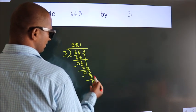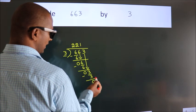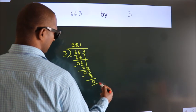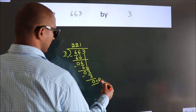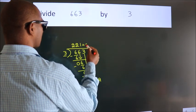After this, no more numbers to bring it down. So we stop here. This is our remainder. This is our quotient.